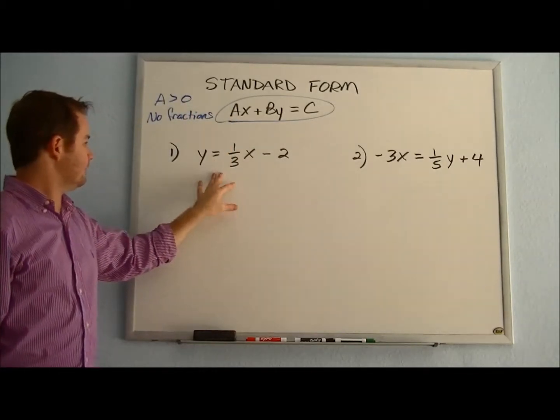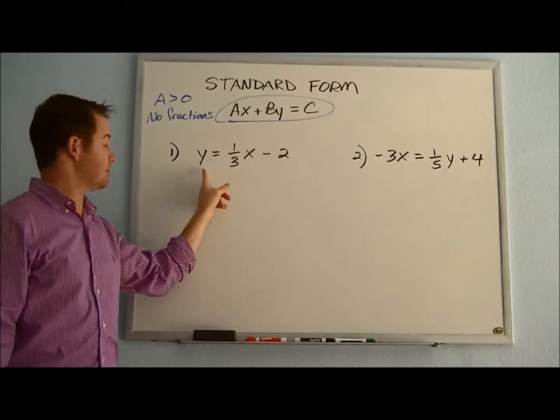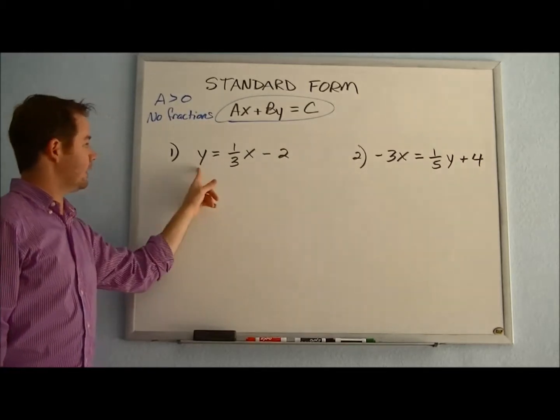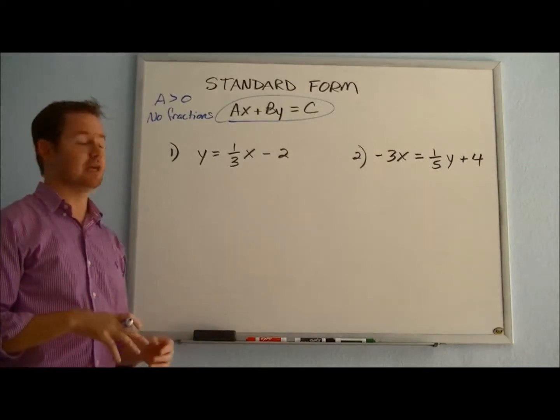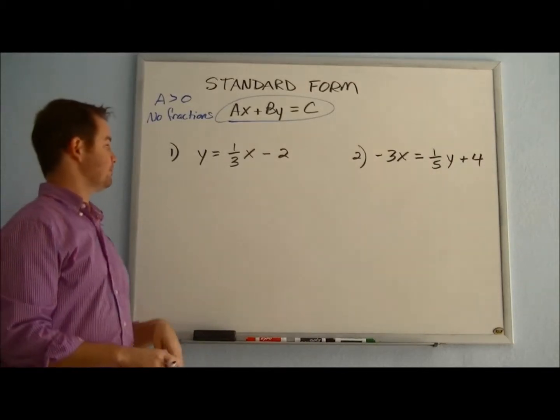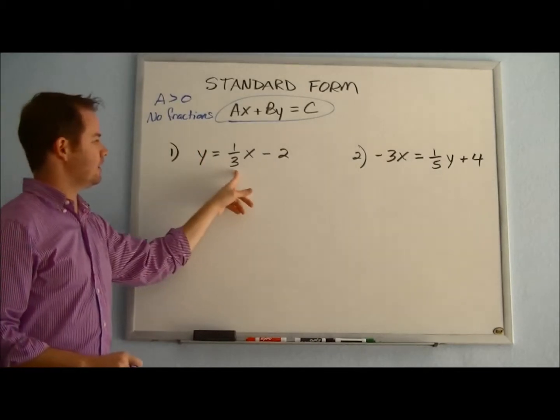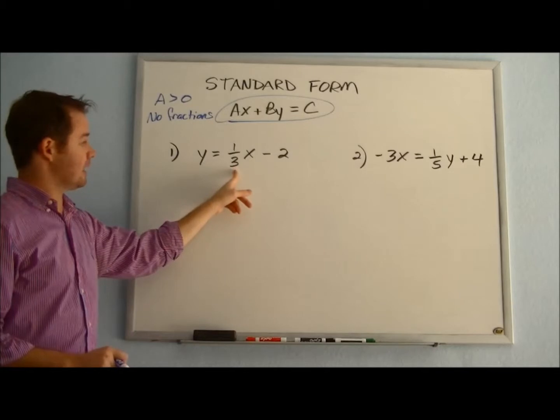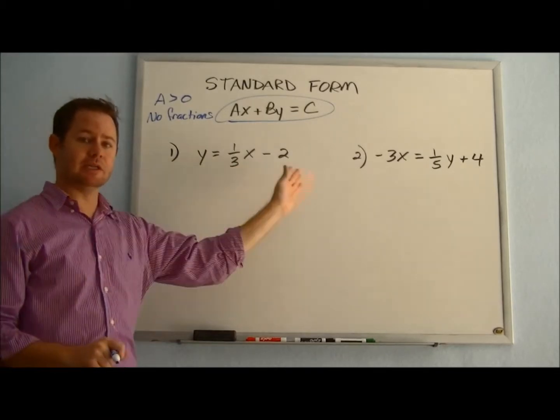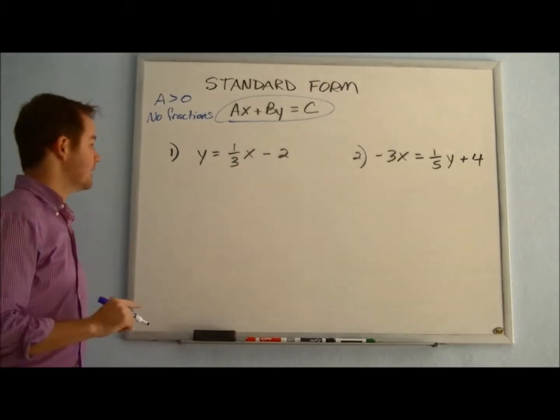So let's take a look at a line written in slope-intercept form, like we see here in number one: y = 1/3x - 2. And let's see how we could convert that to proper standard form. So first, if there's no fractions, we want to go ahead and try to get rid of our fractions on this, which means if your denominator is three, we're going to multiply the entire equation by three to cancel that out.